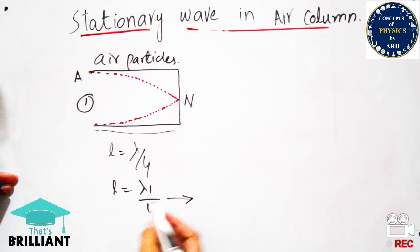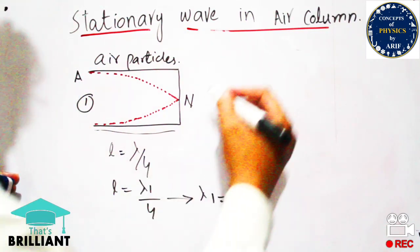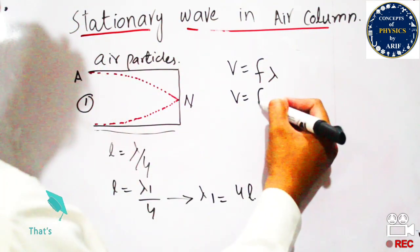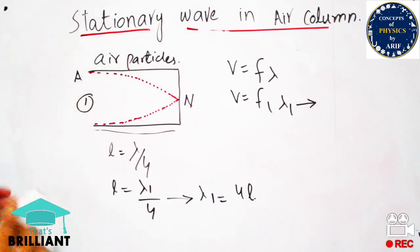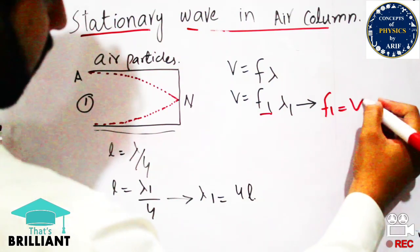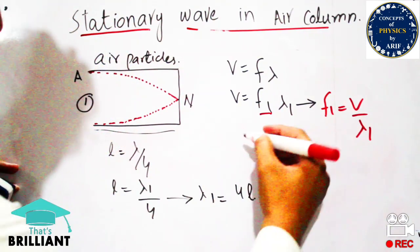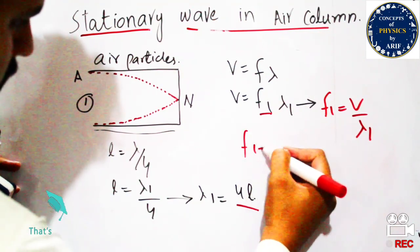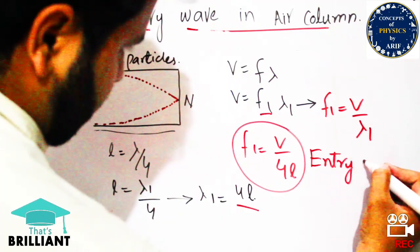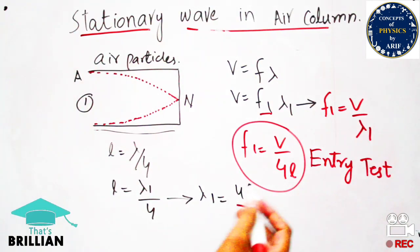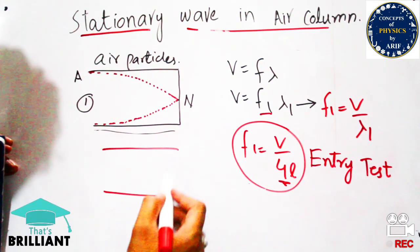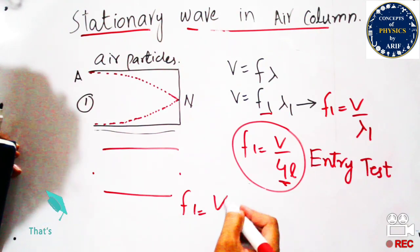We know the formula velocity = f × lambda, so lambda₁ = 4L. From v = f₁ × λ₁, we can extract f₁ = v / λ₁. Substituting λ₁ = 4L, we get f₁ = v / 4L. This is the frequency expression for mode 1 — useful for entry tests when length and velocity are given for a closed-one-end pipe. Note that for a pipe open on both sides, the fundamental frequency is v / 2L, so it is important to differentiate between these two cases.